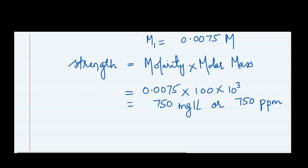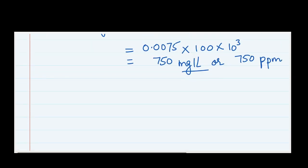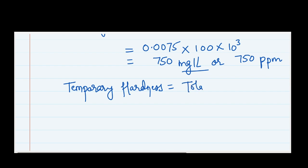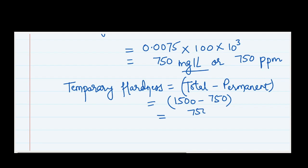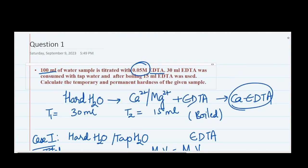Now, if I ask you to convert this answer into all four units — ppm, milligram per liter, degree Clark, and degree French — please solve and report in the comments. For temporary hardness: total hardness = temporary + permanent, so temporary hardness = total − permanent = 1500 − 750 = 750 milligram per liter, or 750 ppm.